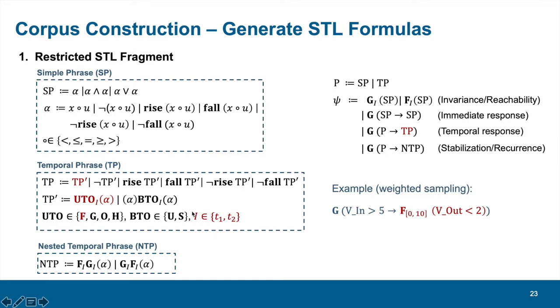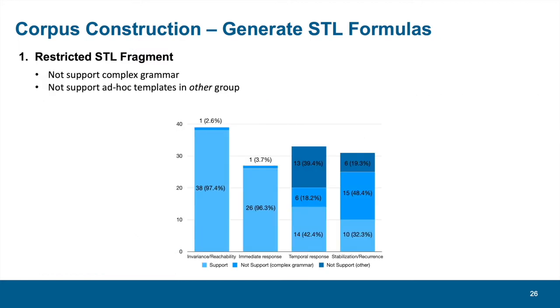Afterwards, we need to decide what represents the atomic proposition alpha in this temporal phrase. So, we go to the bottom layer and select the first item. Finally, we pick the smaller arithmetic operator and randomly generate the signal name and corresponding value to replace X and U in the grammar.